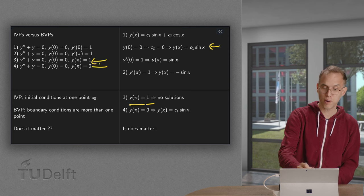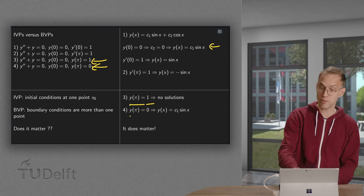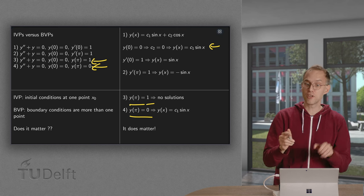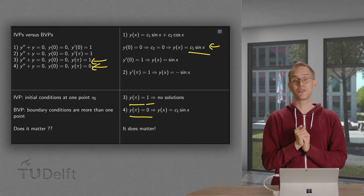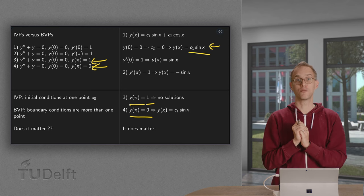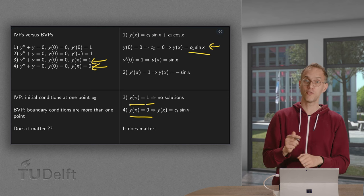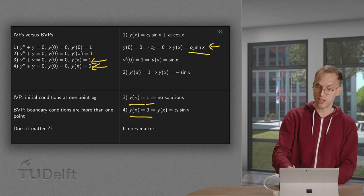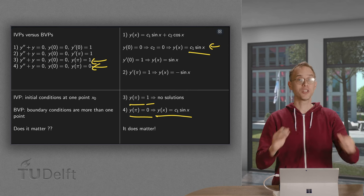And finally the fourth problem. And there we impose y of pi equals zero. Again, the first part is the same. So we find y of x equals c1 times sine of x. Then we impose the second condition. We plug in x equals pi. We always find zero, regardless again of the choice of c1. So our solution equals y of x equals c1 times the sine of x. Where c1 is still free. So in this case we find an infinite number of solutions.